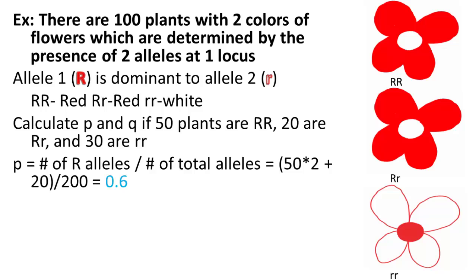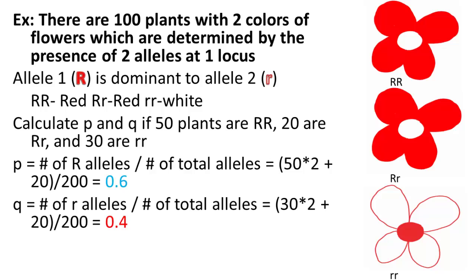You just total up the number of big R's divided by the total. So that's 50 times 2, 20 times 1, divided by 200 total. And then q would be the little r, so 30 times 2, 20 times 1, divided by 200. There you have 60% of the population has big R's—60% of the alleles are big R's, 40% are little r's. And these should add up to 1, so 0.6 plus 0.4 is 1, so it works.